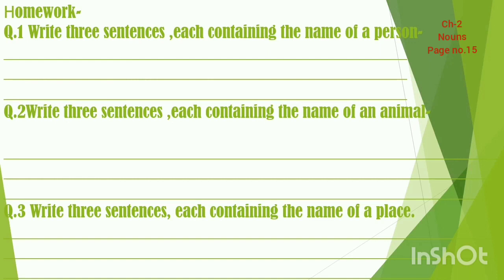Question number two: write three sentences, each containing the name of an animal. Ab tumhe teen sentences likhane hain jis mein teen janwaron ke naam aaye. For example: 'I have a dog,' 'The monkey is sitting on the tree,' or 'The lion is very dangerous.' You can write any type of sentence containing the name of an animal.